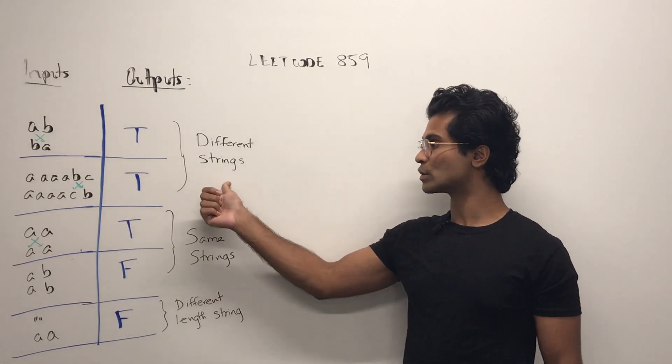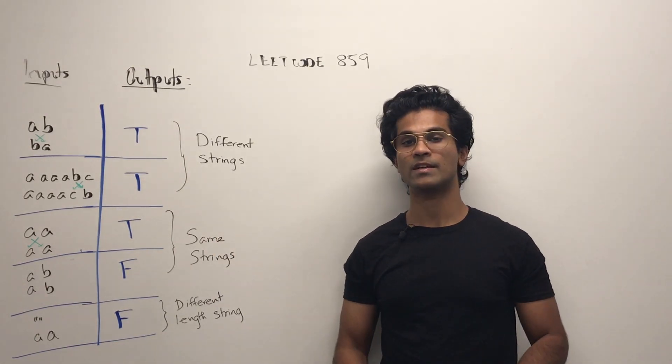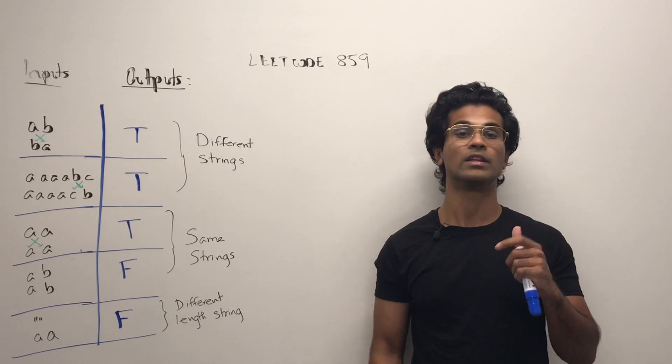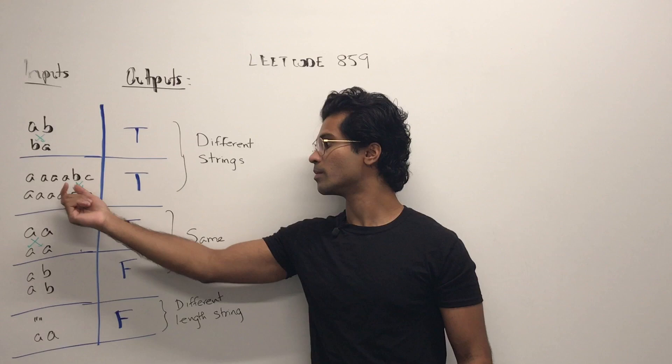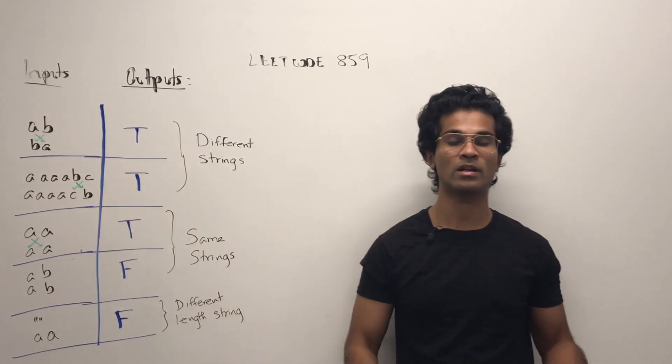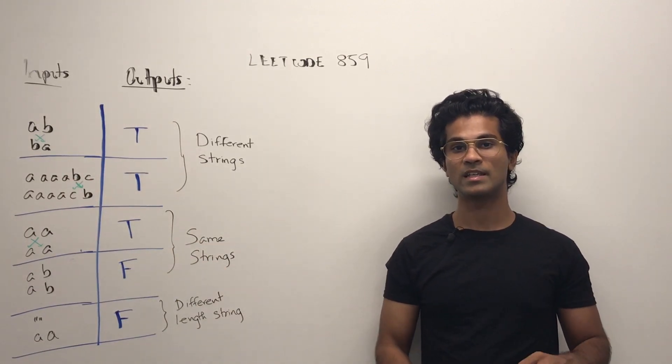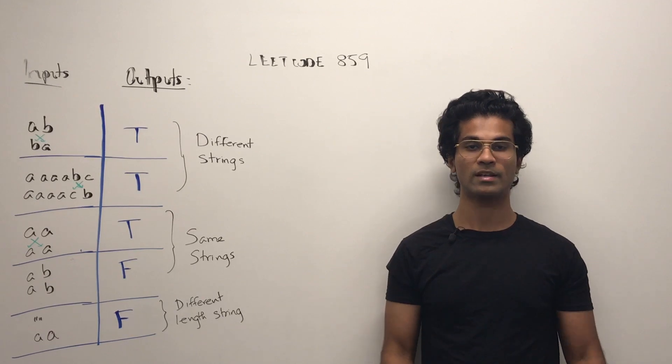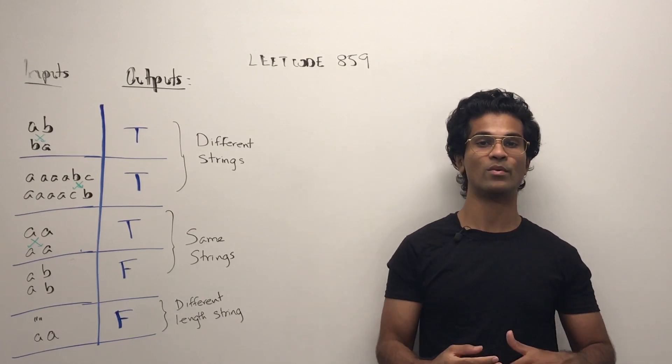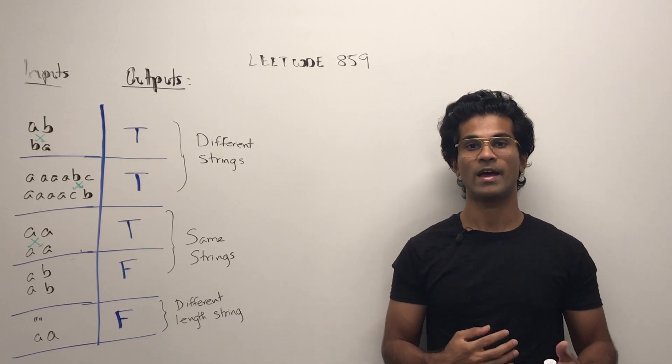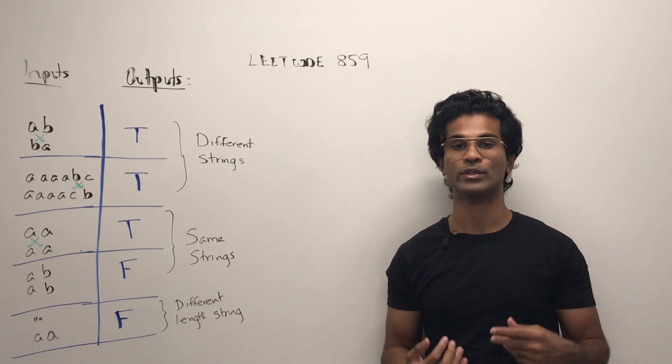And if we have different strings we have to see if the letters in the positions, so A and B can be swapped around. Similarly here B and C, B and C can be swapped around. So all we have to do is keep track of the letters that are different. Make sure that they're different in only two spots and that we can swap them around and make both of the strings equal to each other.